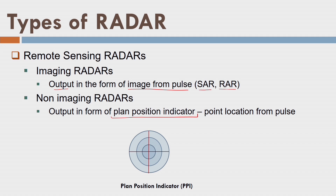This non-imaging radar principle is used for ATC — air traffic control. The ATC on the ground surface has a transmitter-receiver assembly, continuously transmitting signals. When an aircraft comes into ATC range, it is a reflective surface. The aircraft also has a transponder — a secondary radar. The transponder understands there is a position indicator, transmits a pulse back to the ATC, and using this logic we can find the position of a moving object. The plan position indicator shows the aircraft's position as a dot on the screen.